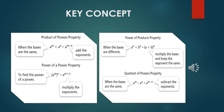Number 3: if we need to find the power of a power, we copy the base and multiply the exponents. Number 4: if we need to find the division of exponential expressions with the same base, we copy the base and subtract the exponents.